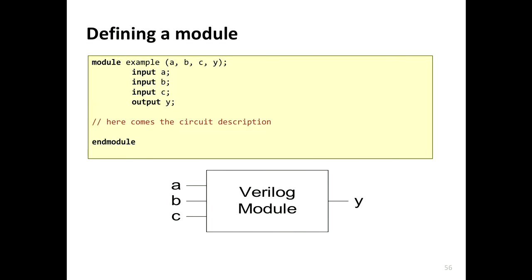You can write the module two ways: either declare the port list first and then specify input/output separately, or you can move 'input A', 'input B', 'output Y' directly into the port declaration. There is literally no difference between these two styles. The signals A, B, and Y are by default single-bit lines.